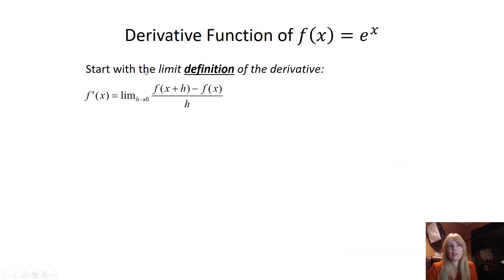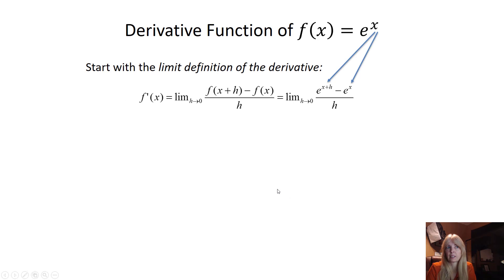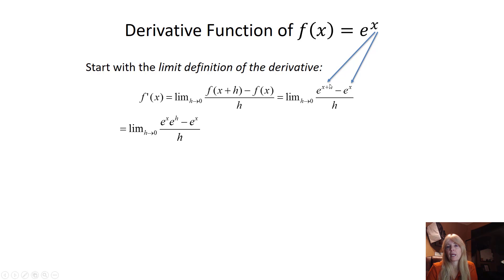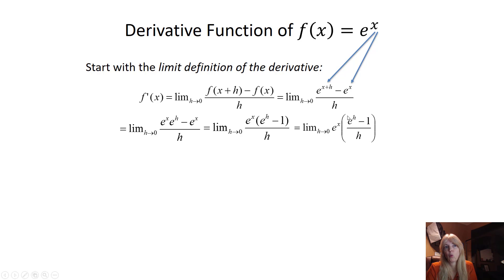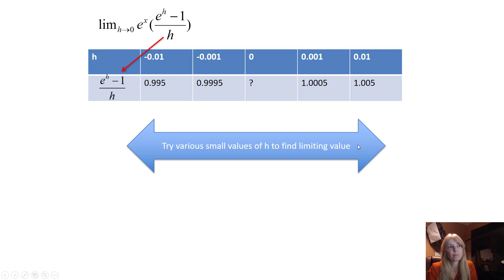Let's use our definition of the derivative for any value of x. Where I see x I plug in x + h, and where I see x I plug in x. When you multiply with the same bases you add the exponents, so I'm separating by multiplying — same base. Then I can factor out an e^x. The only part that matters is the h piece, since as h goes to zero, we examine what the remaining piece in parentheses approaches.